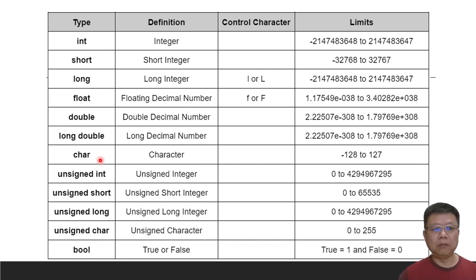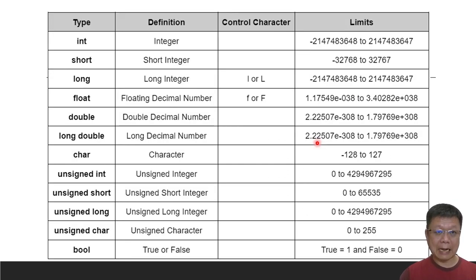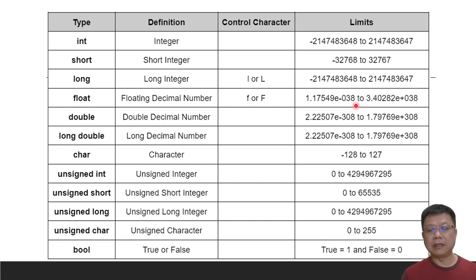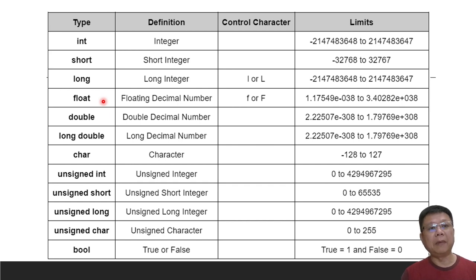Usually the data types used will be number-based and character-based. For numbers, we typically use integer, double, or float — it depends on the case. The difference between double and float depends on their size. Float numbers can go from about 1.1 times 10 to the power of negative 38 up to positive 38 decimal points. When displaying in code, both double and float will typically show up to four decimal points.